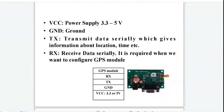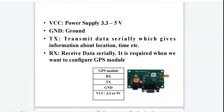Now let us see the different pins of the GPS module. We have VCC for power supply, which operates at around 3.3 to 5 volts. Then the ground pin. TX transmits data serially, which gives information about location and time. RX receives data serially and is required when we want to configure the GPS module.